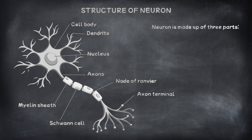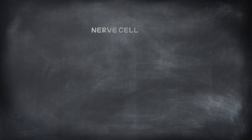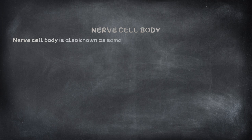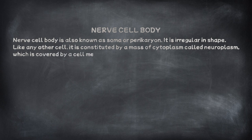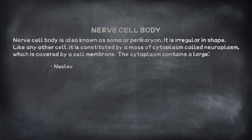A neuron is made up of three parts: 1. Nerve cell body, 2. Dendrite, 3. Axon. The nerve cell body is also known as soma or pericaryon. It is irregular in shape. Like any other cell, it is constituted by a mass of cytoplasm called neuroplasm, which is covered by a cell membrane. The cytoplasm contains a large nucleus, Nissl bodies, neurofibrils, mitochondria, and Golgi apparatus.